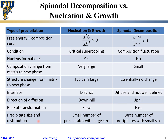Finally, in terms of precipitate size and distribution, for spinodal decomposition there should be a large number of precipitates, each of very small size — typically around 10 nanometers. For traditional nucleation and growth, you often have a smaller number of precipitates; if the undercooling is small, nucleus density is very low and each precipitate grows to a larger size. With very large undercooling, you may have a large number of precipitates with smaller sizes.